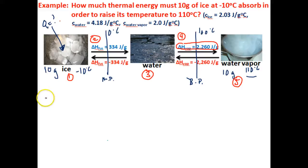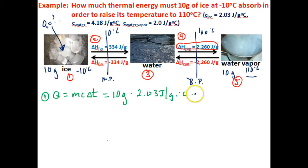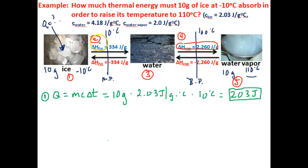Let's start with step one. We are going to calculate the amount of thermal energy this 10 grams of ice will need to absorb in order to raise its temperature from negative 10 to zero degrees Celsius. We do that using the thermal energy equation: Q = mcΔT. The mass is 10 grams, times the specific heat of ice which is 2.03 joules per gram degrees Celsius, times the change in temperature as this ice goes from negative 10 to 0 degrees Celsius — that's 10 degrees Celsius. That gives us 203 joules. This is just the amount of energy this ice will need to absorb to raise its temperature to 0 degrees Celsius.